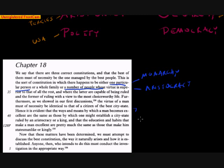Aristotle says, hence it is evident that the ways and means by which a man becomes excellent or virtuous are the same as those by which one might establish a city-state ruled by an aristocracy or a king. And that the education and habits that make a man excellent are pretty much the same as those that make him statesmanlike or kingly.